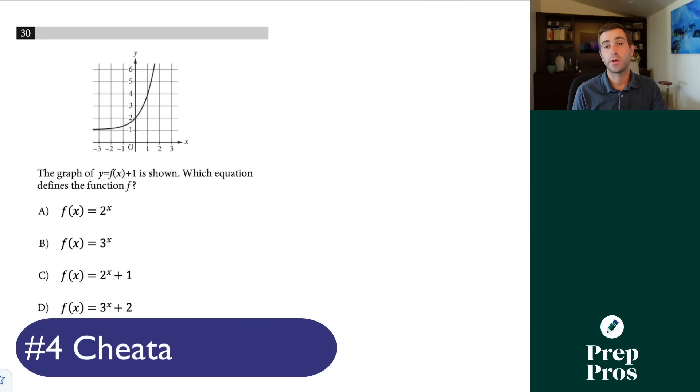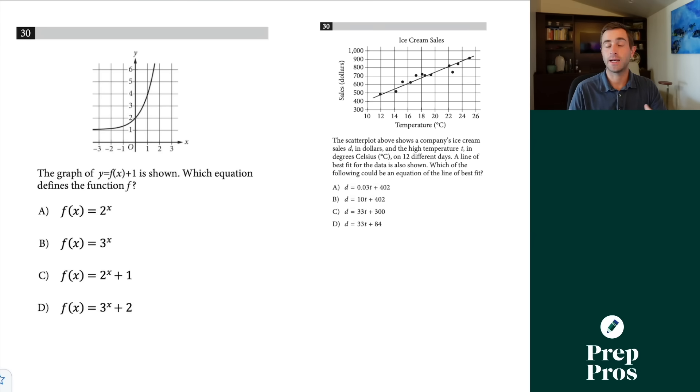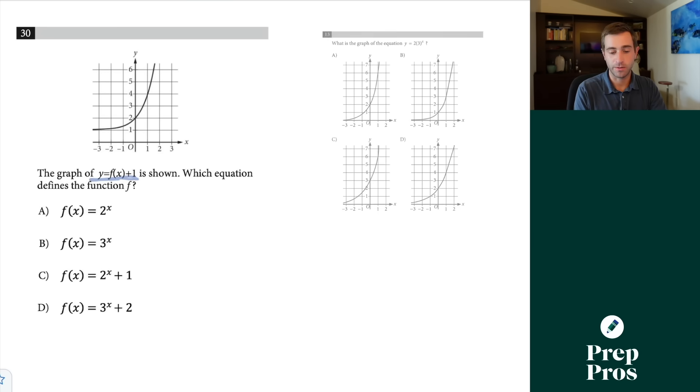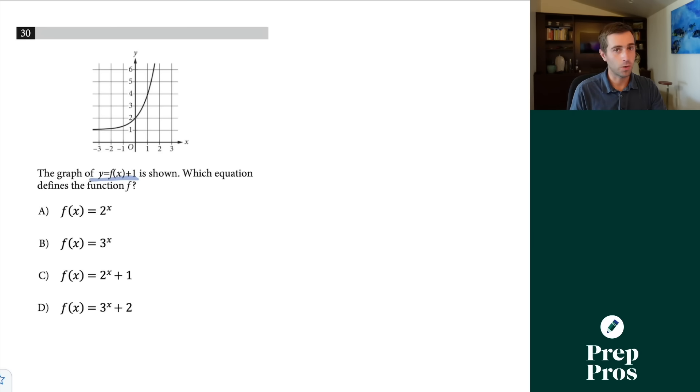The next thing you're going to see are what we can think of as cheatable graphs. Anytime you have graphing questions and you're asked to solve for the equation, all we have to do is plug in points. The more advanced version here involves shifting. Here we see the graph of y equals f of x plus 1. Which equation defines f? If this is f of x plus 1, that means the original function f is shifted down by 1. I first want to pick out a few points. We have to shift it down by 1. I always start with my y-intercept. The first thing I'd do is plug in 0 for x in all of these. We know after shifting down 1, our output has to equal 1.